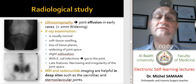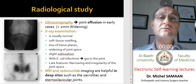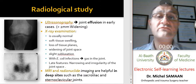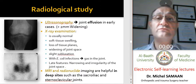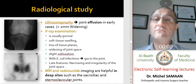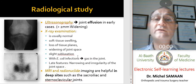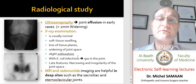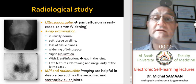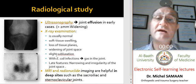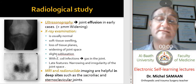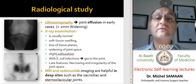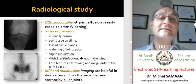In radiological study, using echography or ultrasonography, we should see joint effusion in all cases. On X-ray examination, findings are usually normal in general, but we may have soft tissue swelling, widening of the joint space due to increased pressure in the joint, and sometimes mild subluxation, especially in the hip in children.